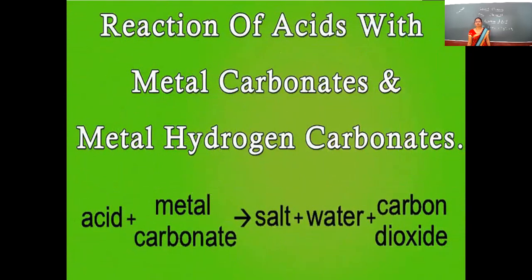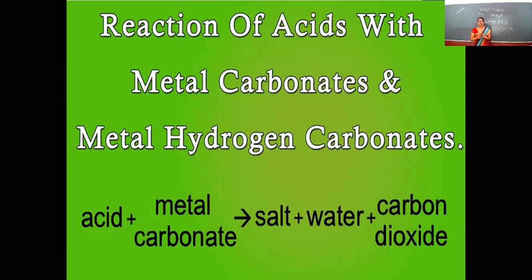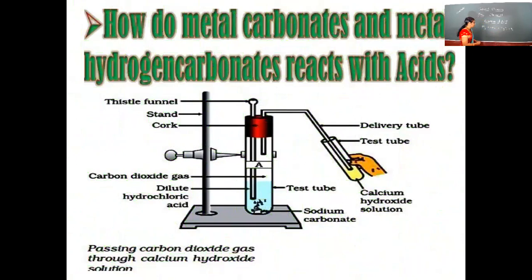The next chemical property of acid is the reaction of acid with metal carbonates and metal bicarbonates. Whether it is carbonates or bicarbonates, the products formed are the same. Three products we get from the reaction of acid with metal carbonate or bicarbonate: salt, water, and carbon dioxide. For example, HCl and sodium carbonate react together.